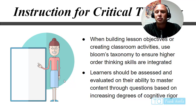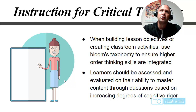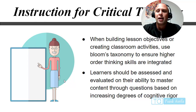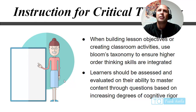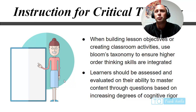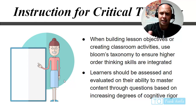When building lesson objectives or creating classroom activities, use Bloom's Taxonomy to ensure higher-order thinking skills are integrated. Learners should be assessed on their ability to master content through questions based on increasing degrees of cognitive rigor. Bloom's Taxonomy has lower levels — just knowledge — working up to synthesis and application. You don't want students just to memorize facts; you want them to apply, create, and evaluate information. Those higher levels of Bloom's Taxonomy are what critical thinking is.